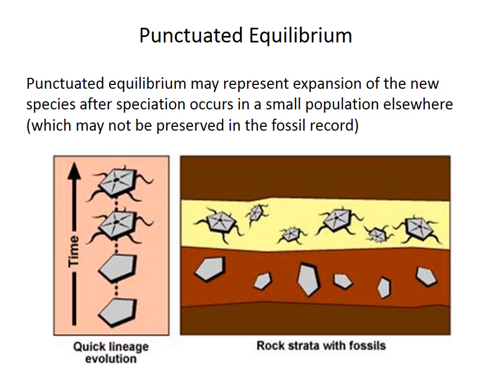If allopatric speciation is common, speciation may occur in a small population not preserved in the fossil record, so the punctuation may represent the geographic expansion of that species after it originated in a small area we're not observing. Moreover, speciation is probably quick enough — hundreds or thousands of years — that it can't be resolved in the geological record anyway, except in extremely common fossil groups, where gaps within a species' observed range will be larger and more frequent for rare species.